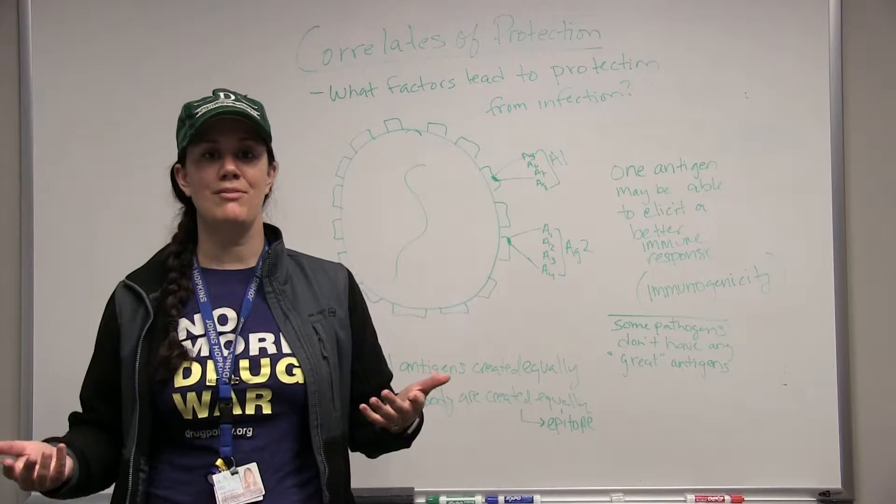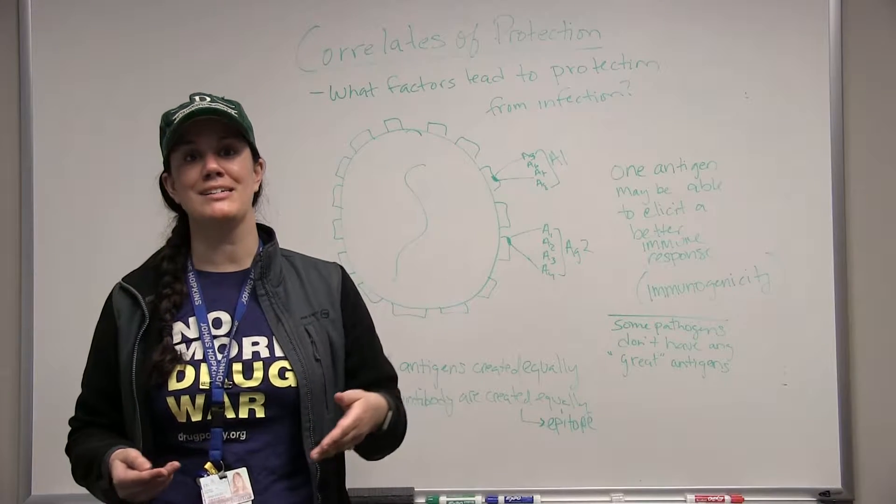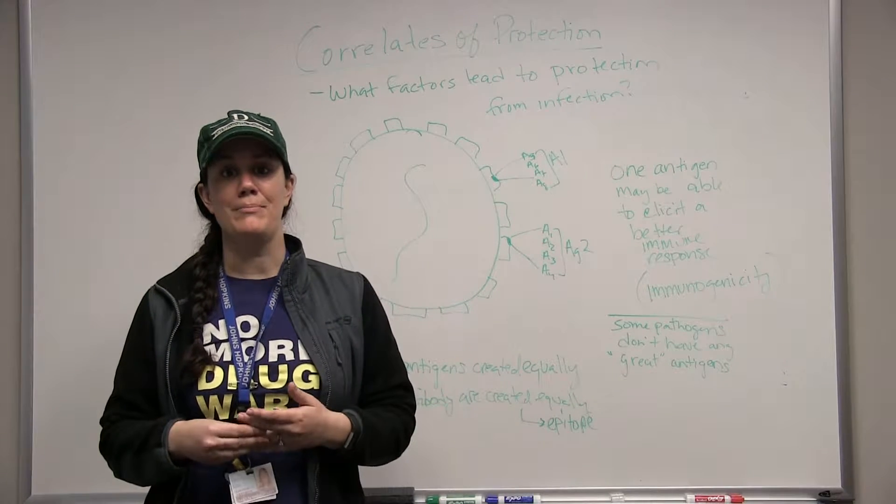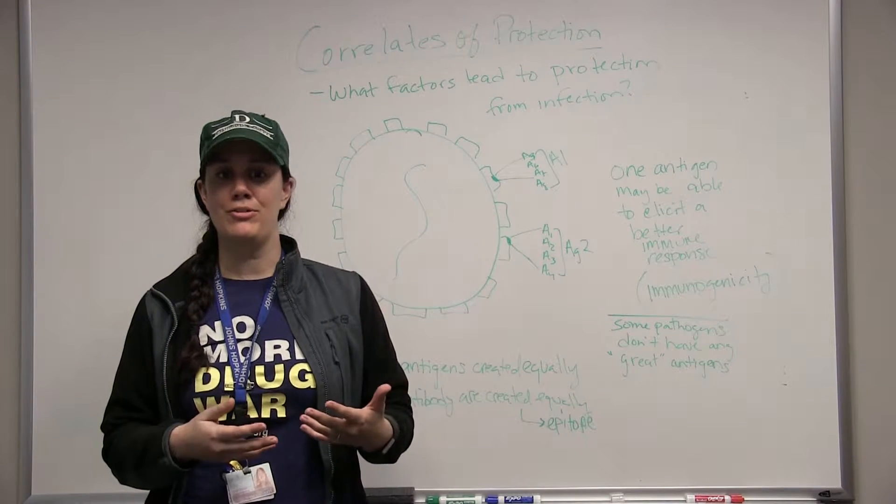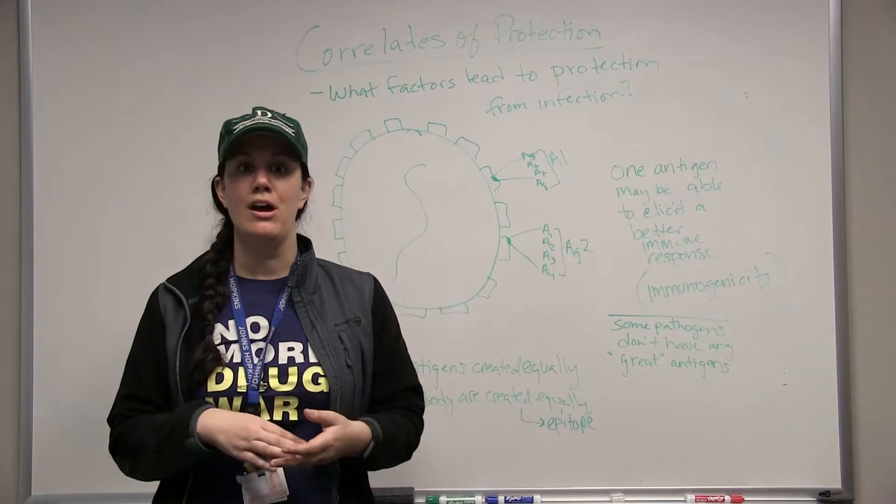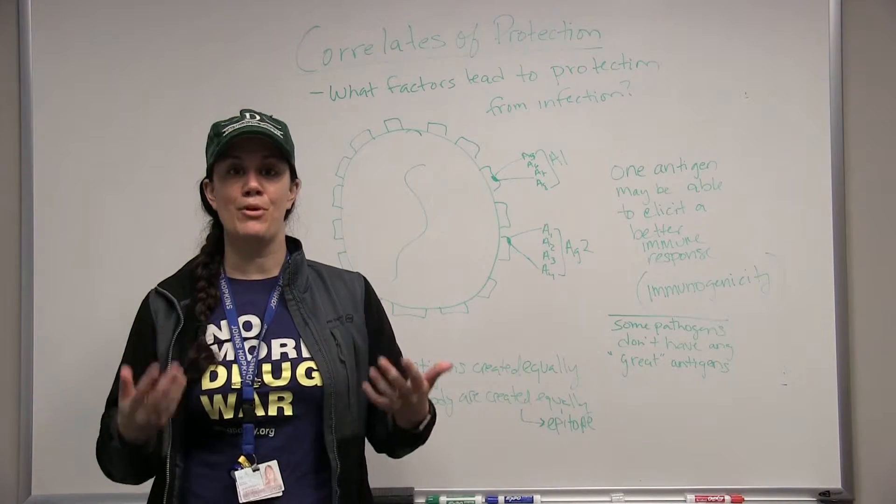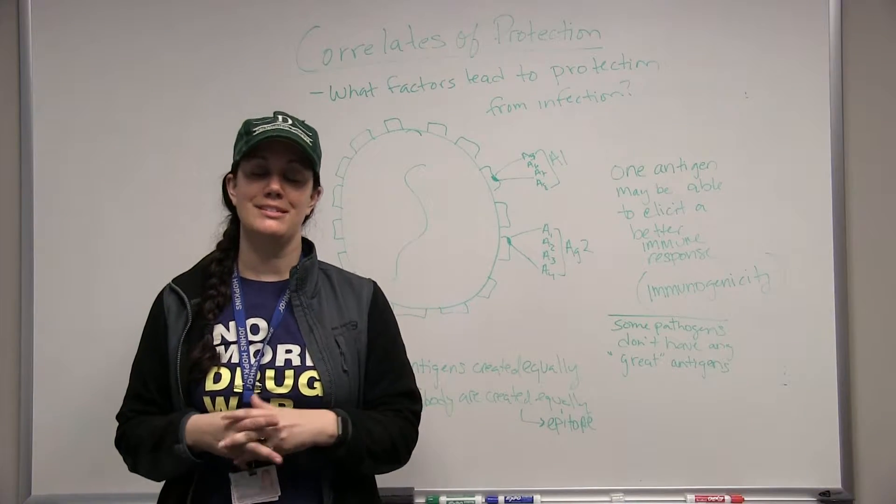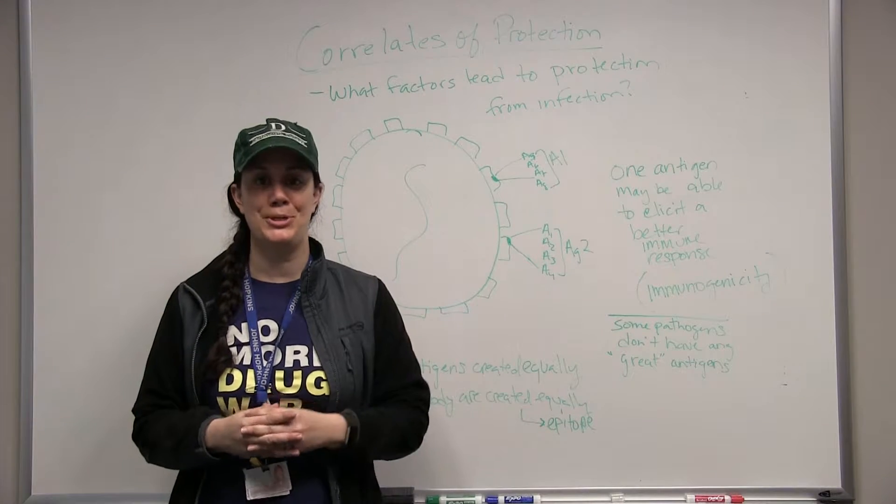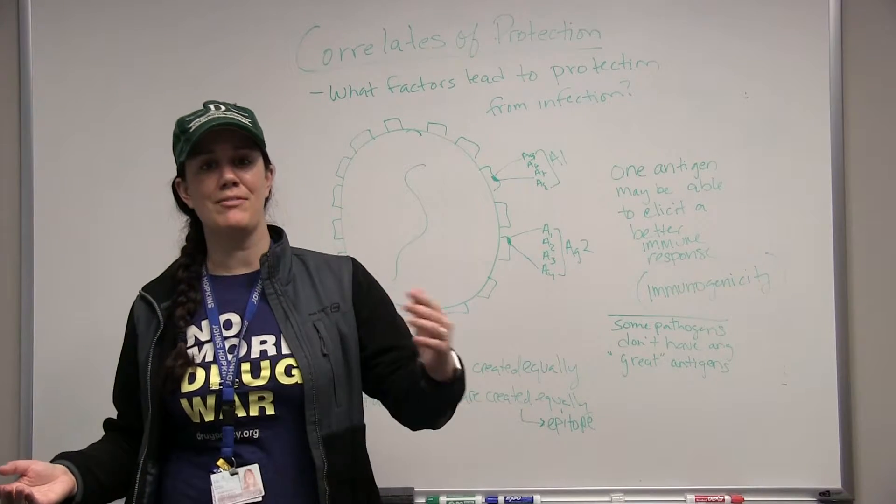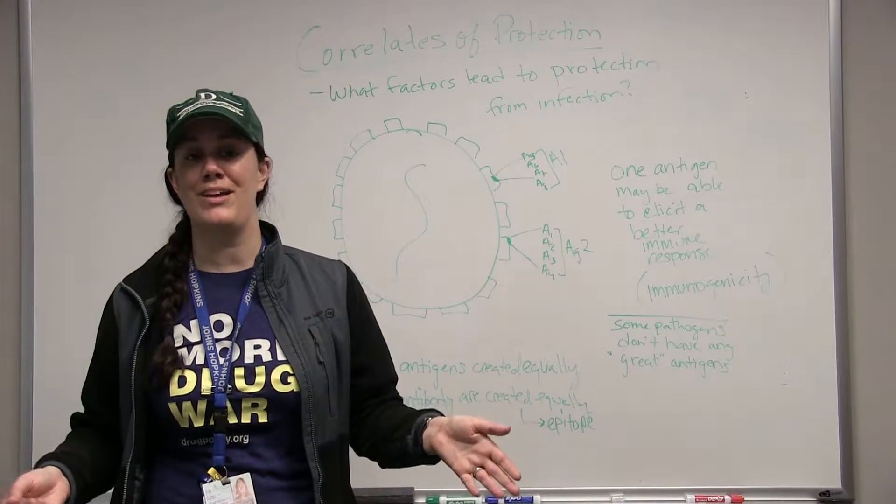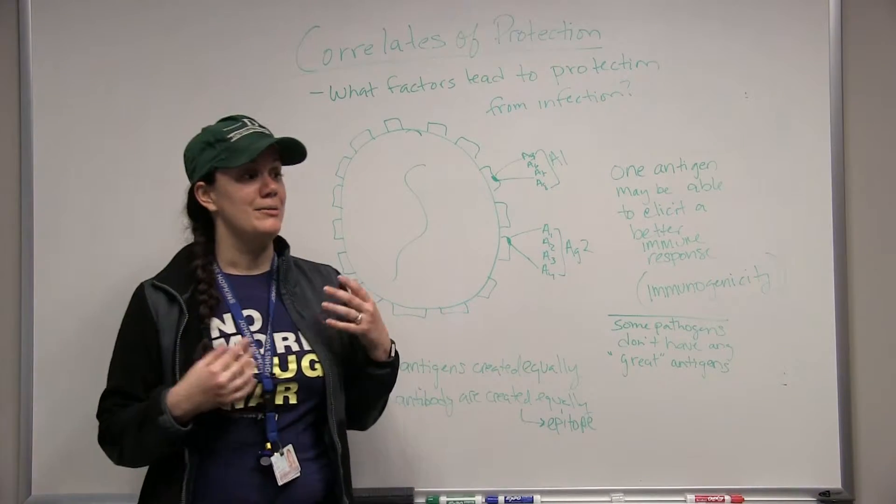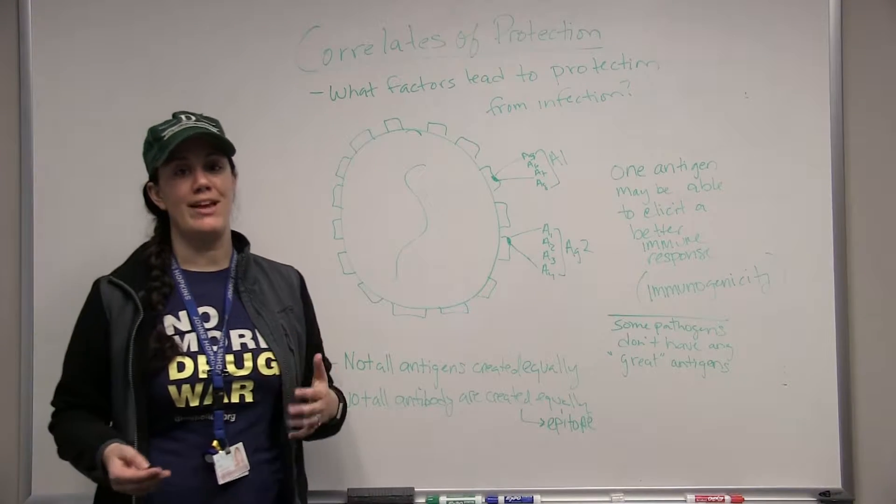There's so many different variables impacting how well vaccines work. Nutrition is another example. In general, Americans getting vaccine have more access to nutrition than some people in other countries. Different nutrition can have a big impact on whether or not a vaccine is efficacious, so these kind of things really impact whether or not we can get a working vaccine.